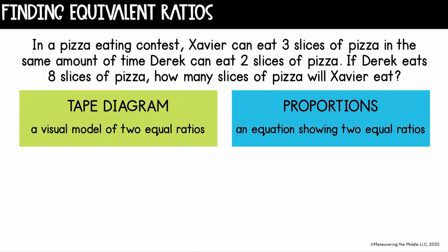Now that we know how to find equivalent ratios, we can actually apply them to different problems. This is typically how you'll see a ratio, or something we call a proportion, solved. I'm going to show you two different ways. This question says: in a pizza eating contest, Xavier can eat three slices of pizza in the same amount of time Derek can eat two slices of pizza. If Derek eats eight slices of pizza, how many slices of pizza will Xavier eat? So we have Xavier eating three slices in the same amount of time as Derek eating two — there's our initial ratio.